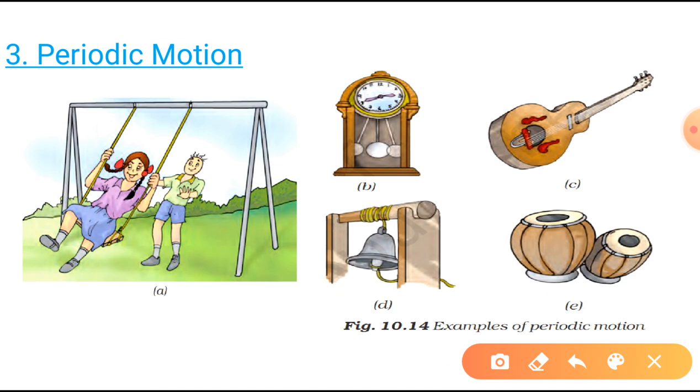A branch of tree moving to and fro. Motion of child on a swing. String of guitar. Or a membrane of drum, tabla, any instrument that has been played. These all are examples of periodic motion where the object or part of it repeats its motion after a fixed interval of time.